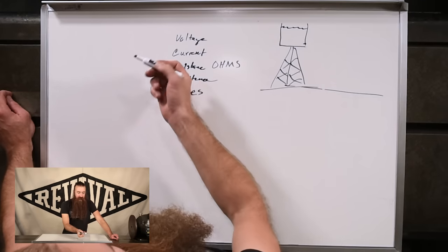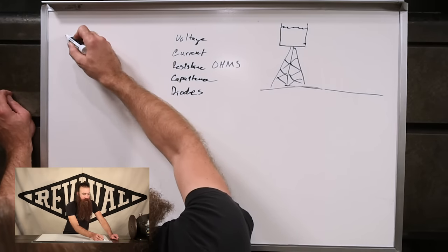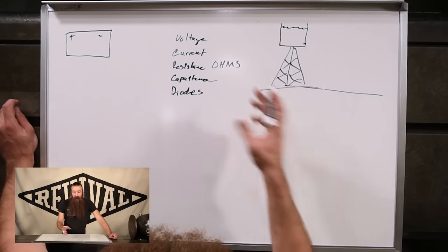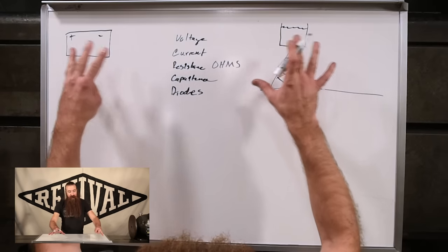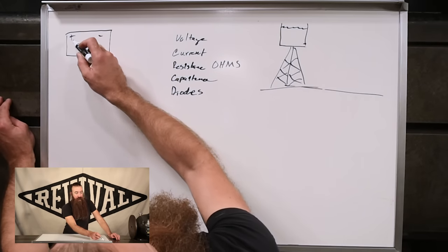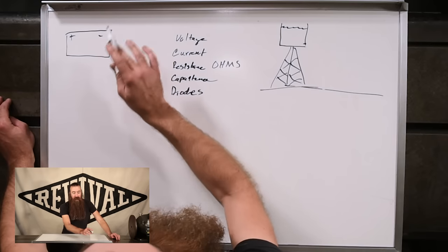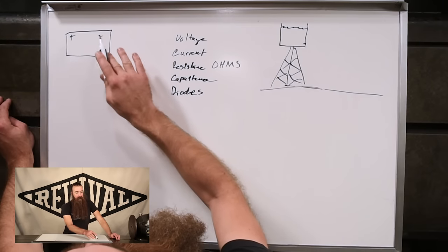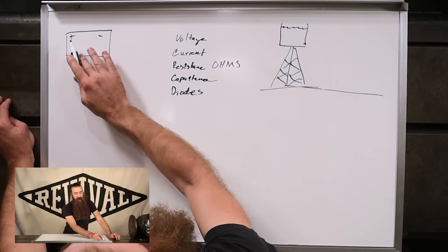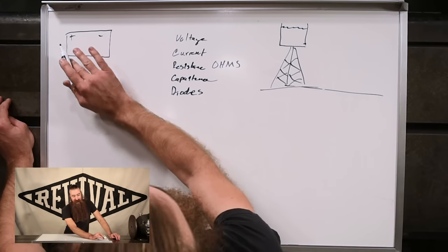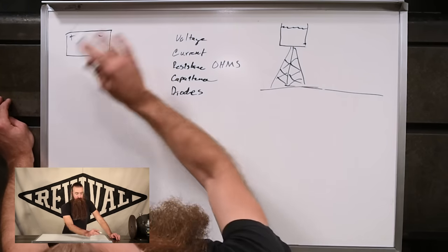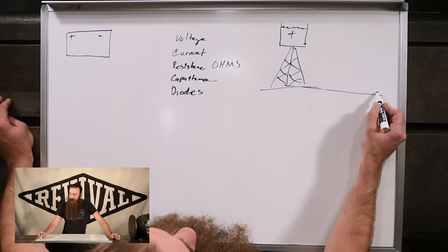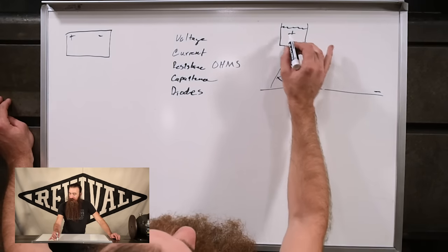On the electrical equivalent side, that's going to be a battery with a positive and a negative. We've got this potential — in the battery example, it wants to go from the positive to the negative. It's much easier to think about current flowing from positive to negative. In the water analogy, the water also wants to flow from positive to negative, which is from the tank down to ground.